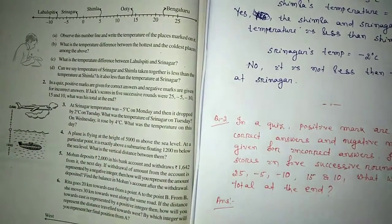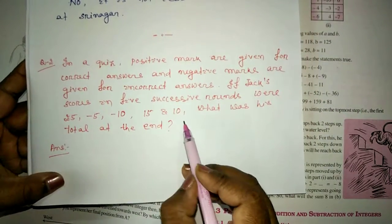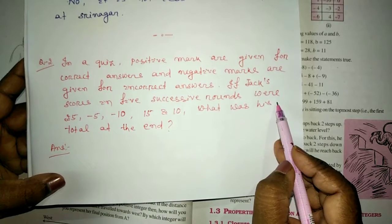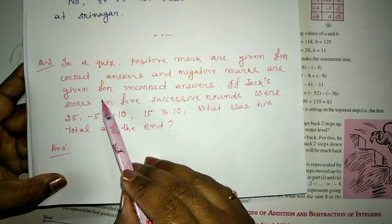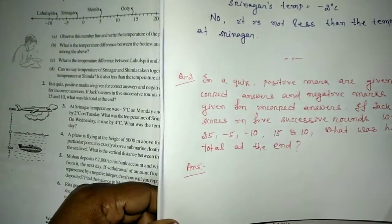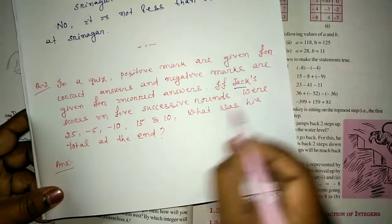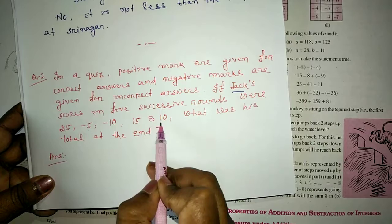This is the question. Here I have written the question also in my copy. The successive scores in a quiz for Jack is 25, minus 5, minus 10, 15 and 10.